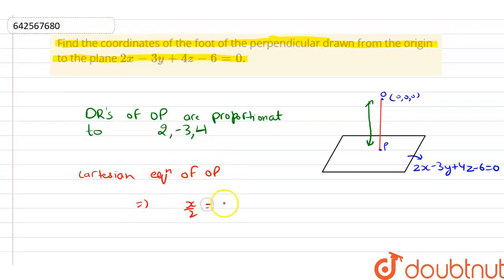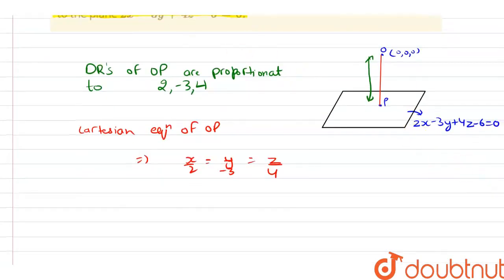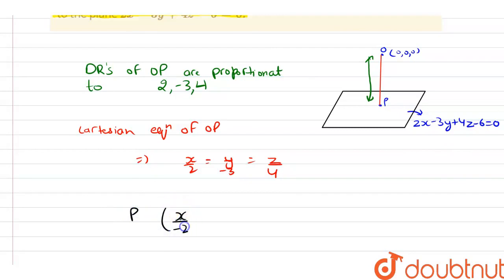Now here we have the Cartesian equation of the OP is given as x/2 = y/(-3) = z/4. So the coordinates now, now the coordinates of P is given as x/2. Let me correct it here.